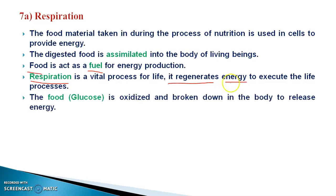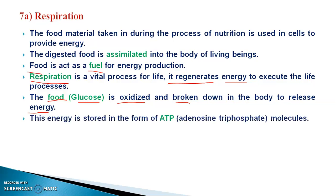This food is consumed by the living organism, basically animals, in the form of glucose. This glucose is first oxidized and broken down in the body. After that, this food material releases energy, which is very important to perform various activities of our body — various metabolic and physiological processes. This energy released by the breakdown of glucose is stored in the form of ATP. What is ATP? ATP means adenosine triphosphate.